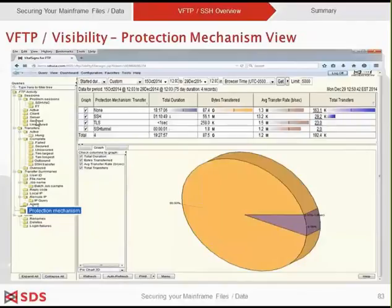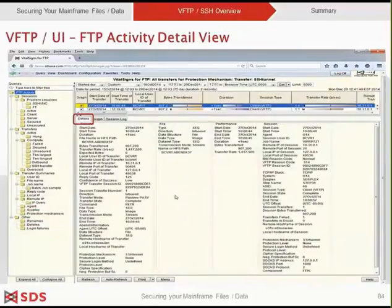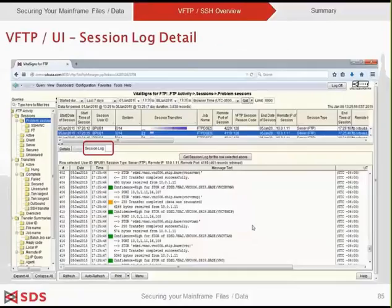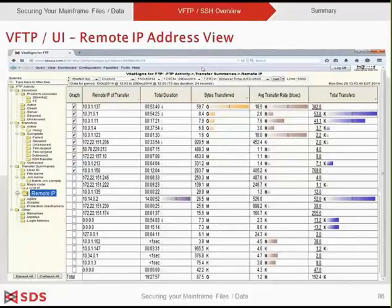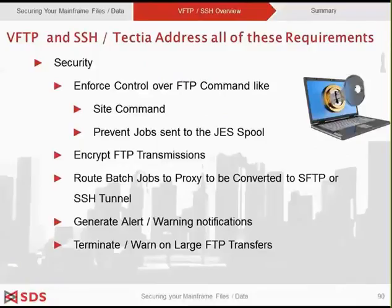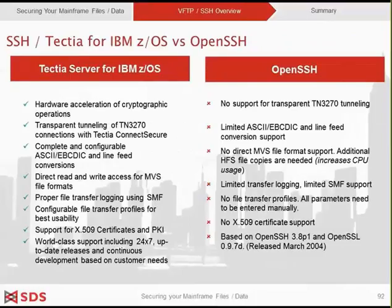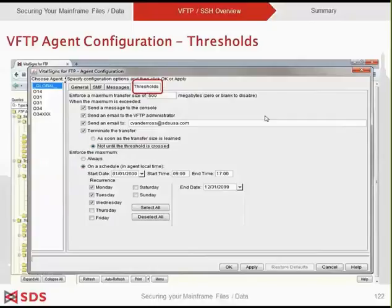On the left-hand side of your screen is a list of all the standard queries that the product ships with. I've elected to run the protection mechanism query for an extended period of time, and you can now see a breakdown of all the different traffic types on the SDS mainframe. I've selected one FTP transfer and elected to view the technical detail of this particular transfer. I can select the session log tab and see the context of the FTP transfer. This query shows all FTP transfers from the remote IP network. VFTP, when used with a product like SSH Tech Tier, allows customers to secure FTP transmissions and seamlessly migrate unsecured FTPs to a secure medium. This slide highlights the differences between SSH Tech Tier and Open SSH, including features not supported on the Open SSH product. The threshold tab allows you to control the size of FTP transfers that traverse your network.